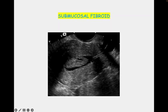FIGO type 0 and type 1, and sometimes type 2 fibroids can be evaluated. FIGO type 0 fibroids are very easily seen on SIS. Sometimes FIGO type 2 fibroids, which we are not able to identify on TVS, can be identified when saline is instilled because the indentation of the cavity becomes visible. So SIS is especially helpful for type 2 fibroids.